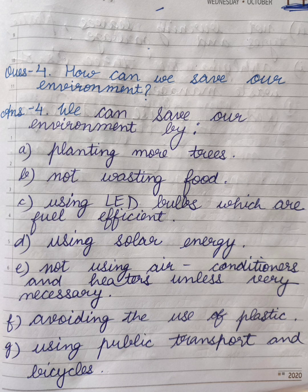Question 4: How can we save our environment? Answer 4: We can save our environment by A. Planting more trees. B. Not wasting food. C. Using LED bulbs which are fuel efficient. D. Using solar energy. E. Not using air conditioners and heaters unless very necessary. F. Avoiding the use of plastic. G. Using public transport and bicycles.